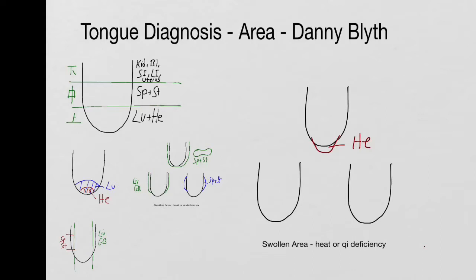If the whole front is swollen, it tends to be the lung: phlegm in the lungs or heat or chi deficiency depending on the colour. If you have what they call a hammer tongue, the whole front is swollen. This shows quite a serious condition of fluids not moving in the upper jiao, and this is either caused by serious overwork or a mental health problem - the heart's not happy.